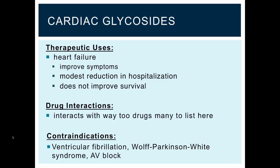Therapeutically, the cardiac glycosides are used for heart failure. Carefully controlled trials have revealed that digoxin reduces symptoms in patients with congestive heart failure — it increases exercise tolerance and can reduce hospitalizations. But importantly, it does not prolong life or reduce mortality. Cardiac glycosides like digoxin have a wide array of drug interactions, way too numerous to list here, but it is worth remembering that they have numerous drug interactions.